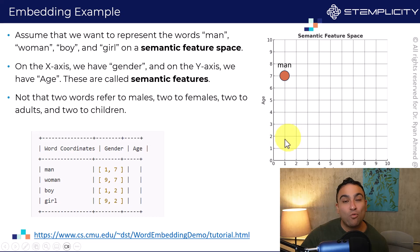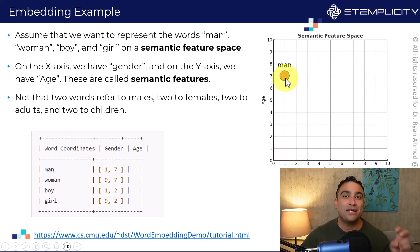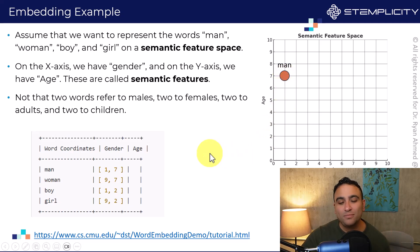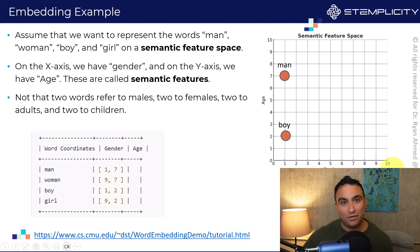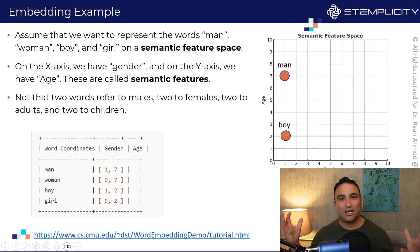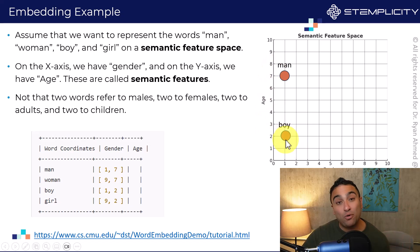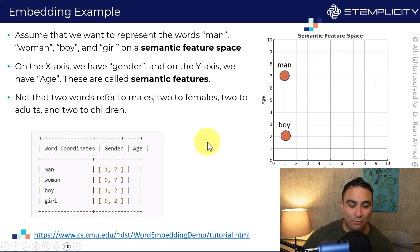A boy would be somewhere here because on the age axis, man is usually older than a boy. So 'boy' is going to have the same number one on the gender column, because they represent the same gender. But they will differ on age, because a boy is usually younger than a man.